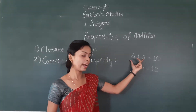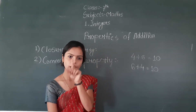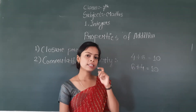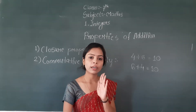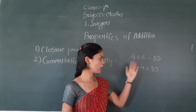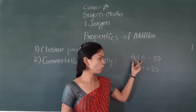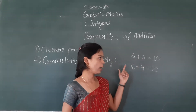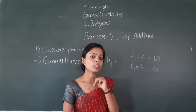These are called addends. That means if we add two numbers and then change the places of the integers, that will not affect your answer. This is our second property — commutative property.